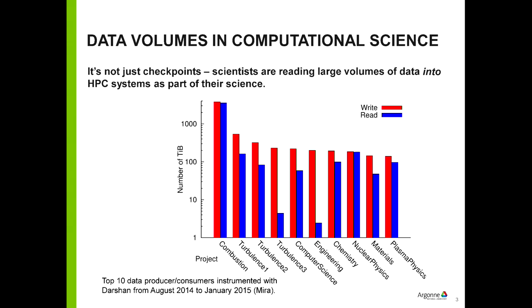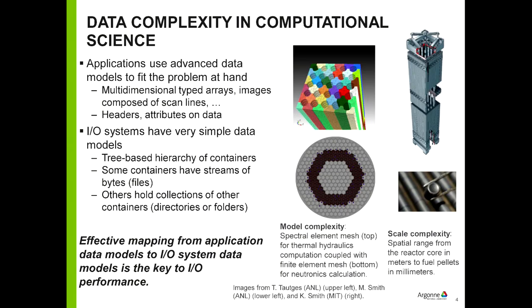A study from about a year and a half ago sampled projects running on the ALCF system and looked at how much data they were reading and writing. There are a lot of different science fields running on these systems — the top ten span the gamut of science activities — and some of them are reading and writing petabytes of data over a six-month span. Interestingly, we also see a lot of read activity, which can be a surprise to computer scientists in this field.